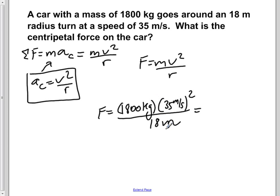Now 1,800 kilograms divided by 18 meters will give us 100 kilograms over a meter. And then 35 meters per second squared will give you 1,225 meters squared per second squared. We now carry out the multiplication here.